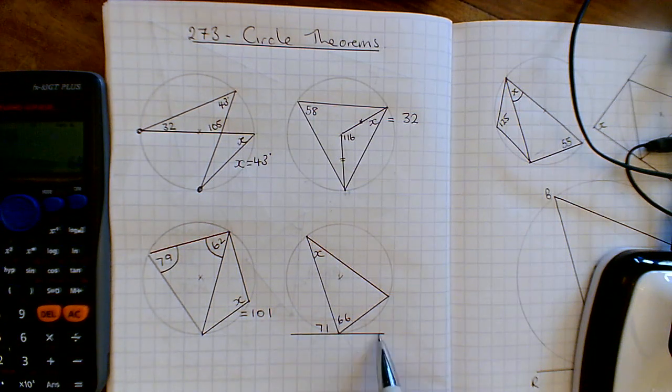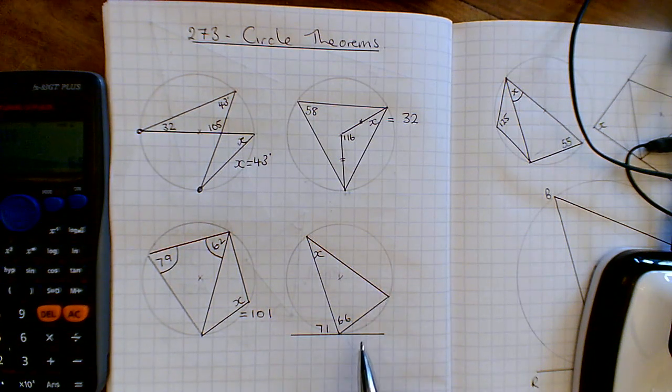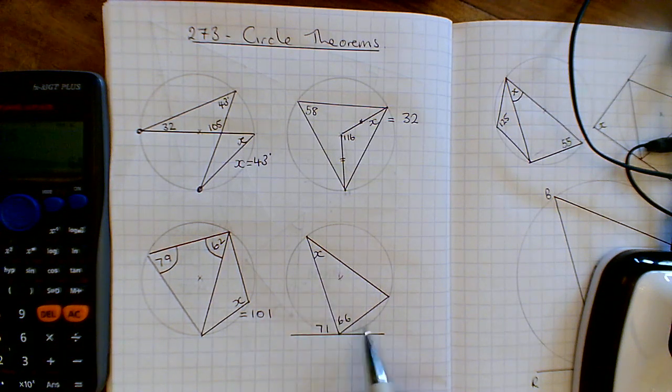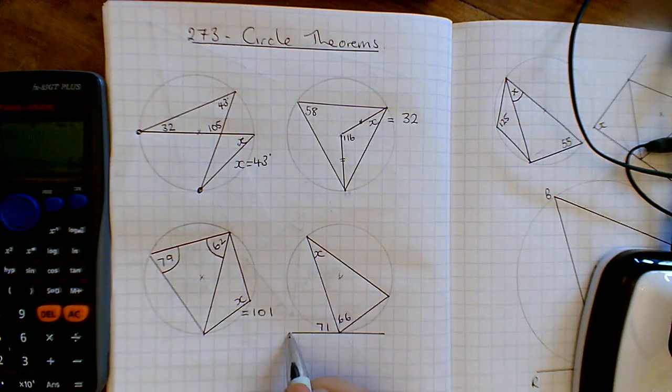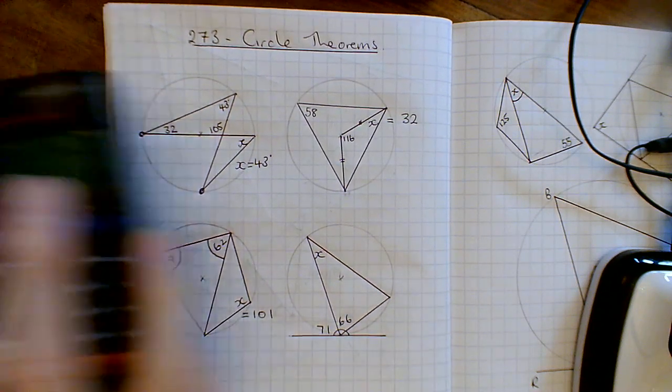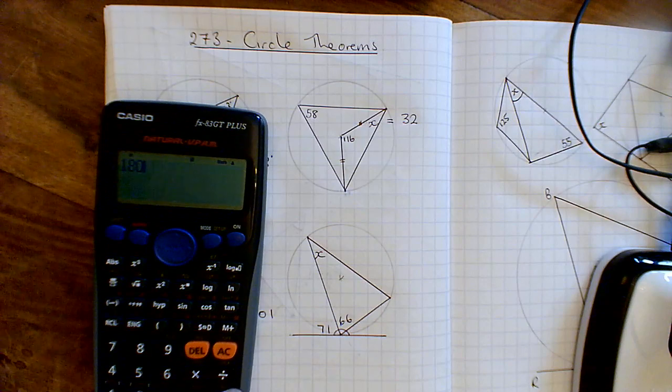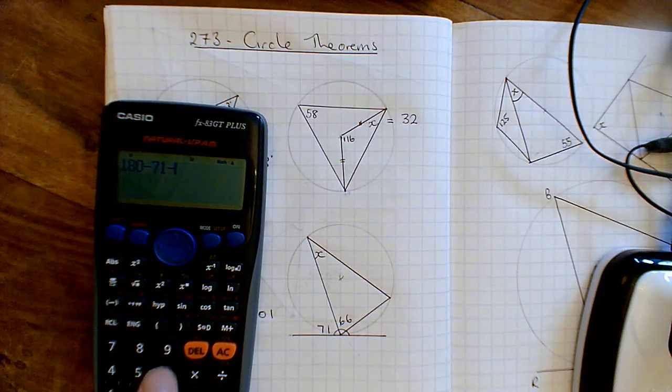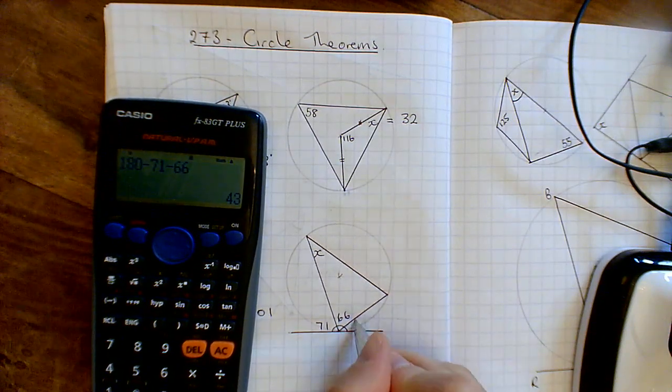On this one here, I've got a tangent. There's only a few theorems with tangents. One's the alternate segment theorem, which I think is going to come down here. So x is this angle down the bottom here. And what I know, I've got angles at a point on a line. So these three have got to add up to 180. So if I just take my calculator, 180, take away the 71, then take away the 66. I've got this angle down here as 43.